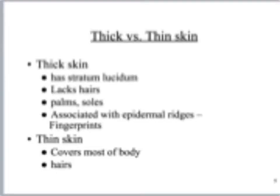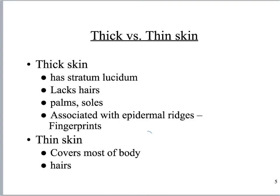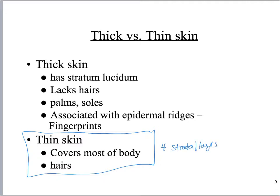Most of the body is covered with what we call thin skin, meaning the epidermis is thinner with four strata of cells. Thick skin has five layers; the fifth layer is called the stratum lucidum. Features of thick skin include no hair, and it's only found on the palms of your hands and soles of your feet. Thick skin also has epidermal ridges, which create your fingerprints.